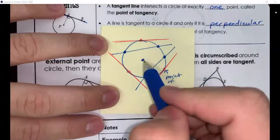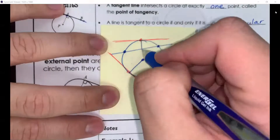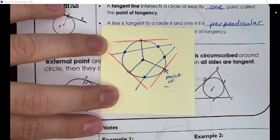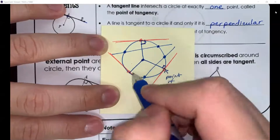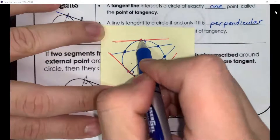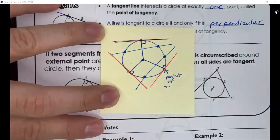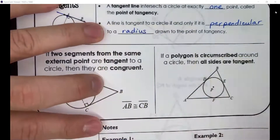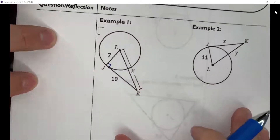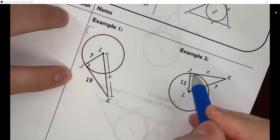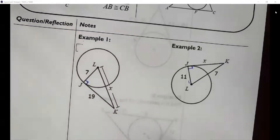If I connect the radius to any of these points of tangency, it will always create a 90-degree angle. Anytime I connect a point of the tangent line to the radius, it's always going to form a 90-degree angle. You can see that with the tangent line connected to the radius giving us a 90-degree angle here. A lot of problems will involve some kind of trigonometry or right triangles because of this.